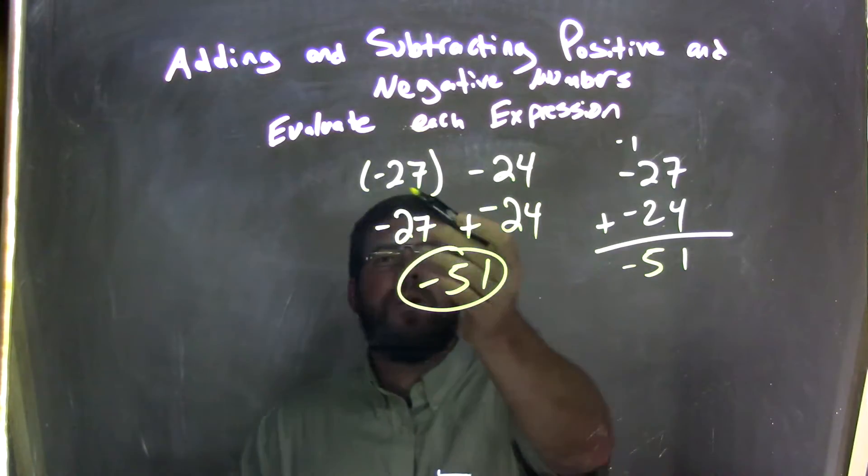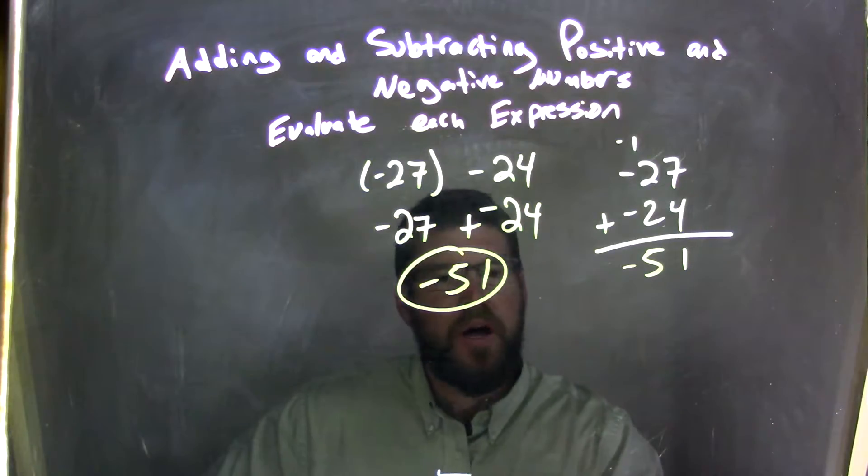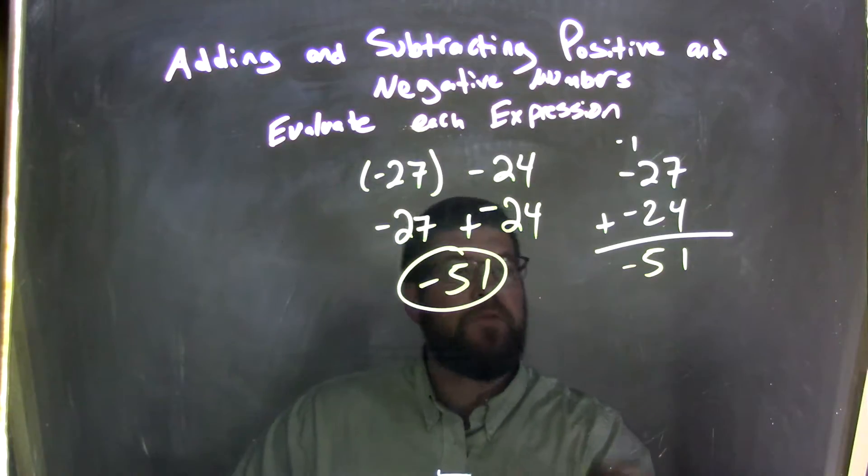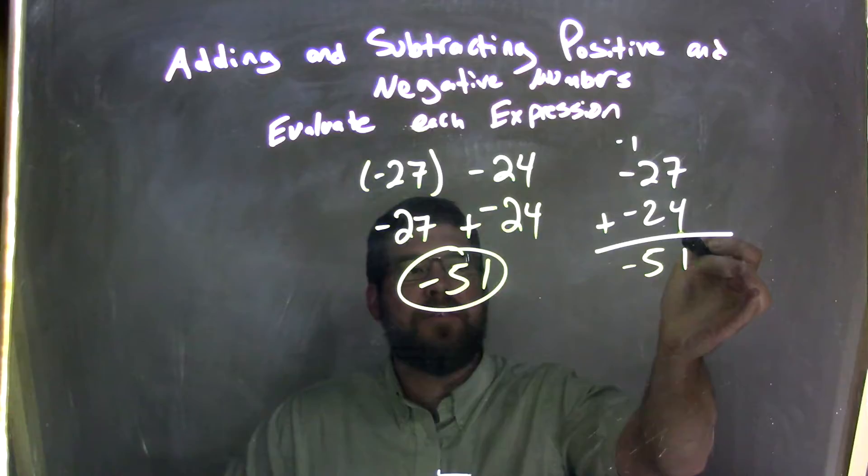So again, let's start from the beginning. We have negative 27 minus 24. Subtraction is the same thing as adding a negative, so we have negative 27 plus a negative 24. And then we combine those, we add them together, negative 27 plus a negative 24.